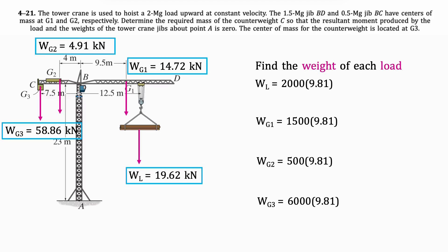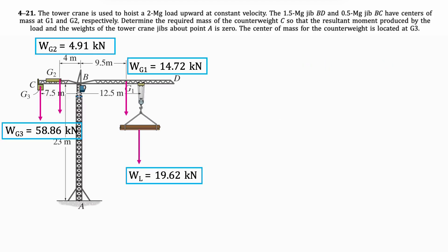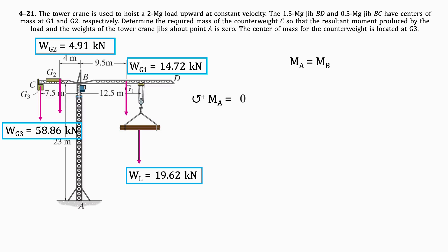Knowing this, we can get the moment about points A and B. Since the force of each load only has a y-component, we will only be considering the distance in the x-plane when finding the moment. This distance remains the same for points A and B, so the moment about points A and B is the same. Let's set up a moment equation using the given distances and the weights we just calculated, as shown.